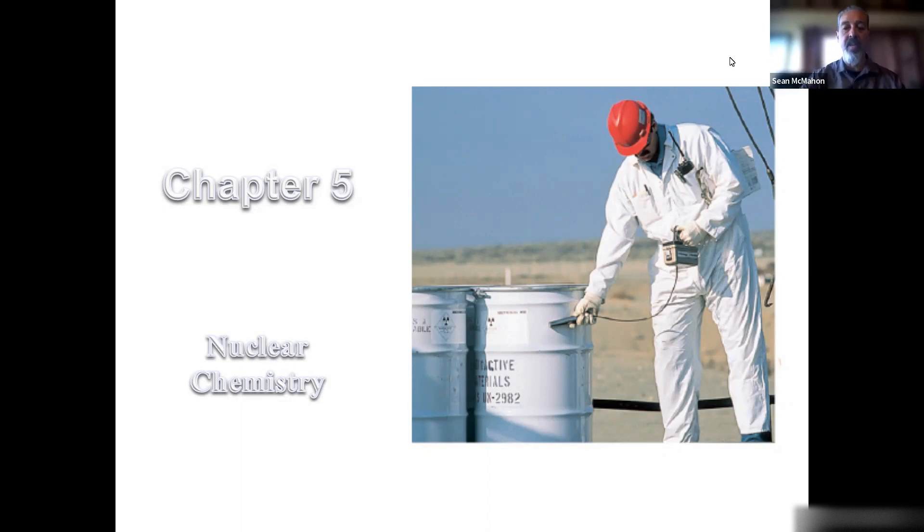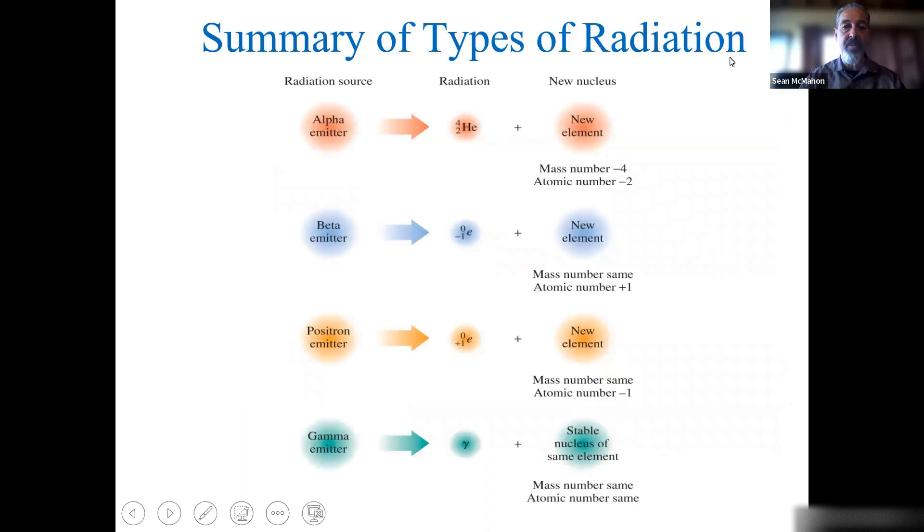As a review, the summaries of the different types of radiation: alpha emitters create new elements by decreasing the mass number by four and the atomic number by two. Beta emitters release a negatively charged particle, creating a new element with the same mass number but increasing the atomic number because a neutron is converted into a proton. That's why we had to shoot out a negative charge to balance the charge of the neutron, and the atomic number goes up one.